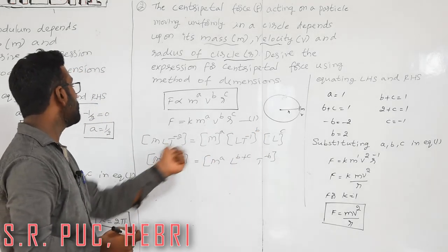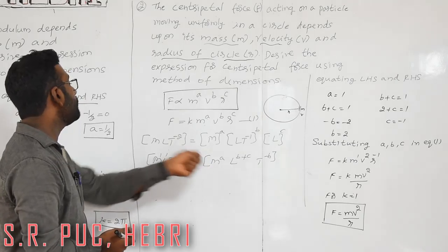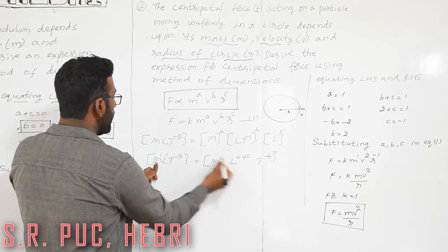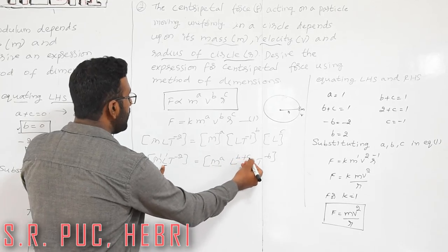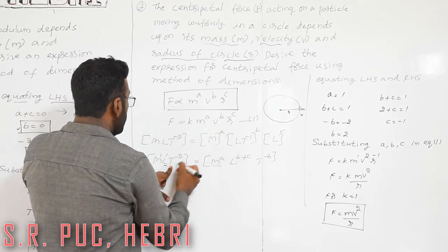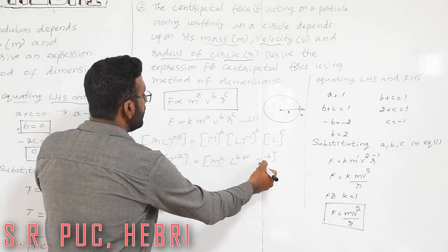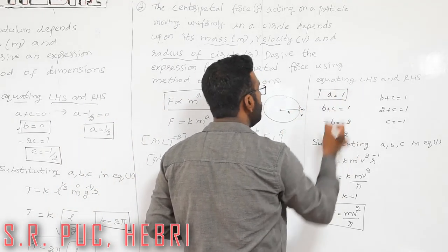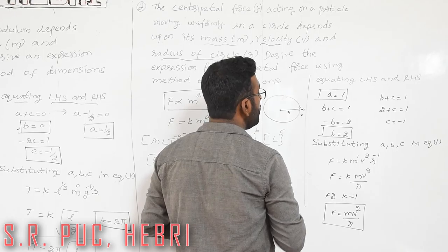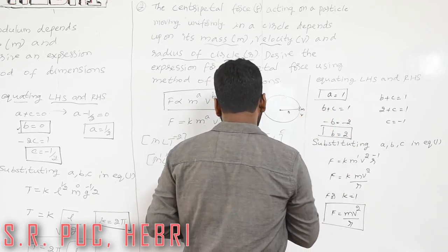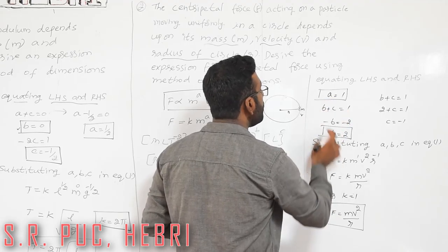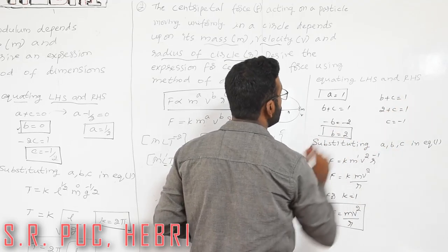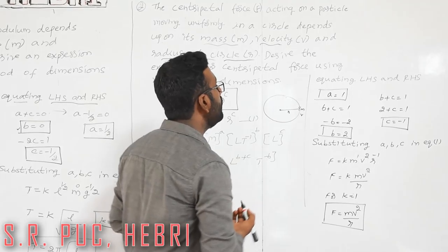Comparing powers on both sides: for M: a = 1; for T: −b = −2, so b = 2; for L: b + c = 1, so 2 + c = 1, giving c = −1.